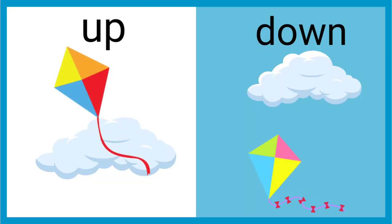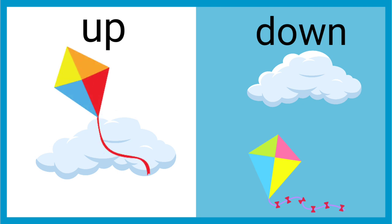Up and down. The kite is up in the sky while the other kite is down.